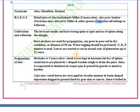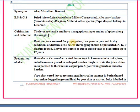So aloe barbadensis is Curacao aloe, Aloe perryi is Socotrine aloe, and Aloe ferox is Cape aloe. Aloe belongs to family Liliaceae. Regarding cultivation, the leaves are sessile and have a strong spine at the apex and do not have spines along the margin.